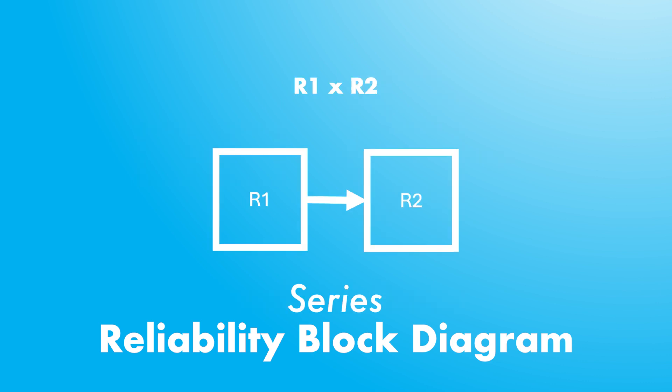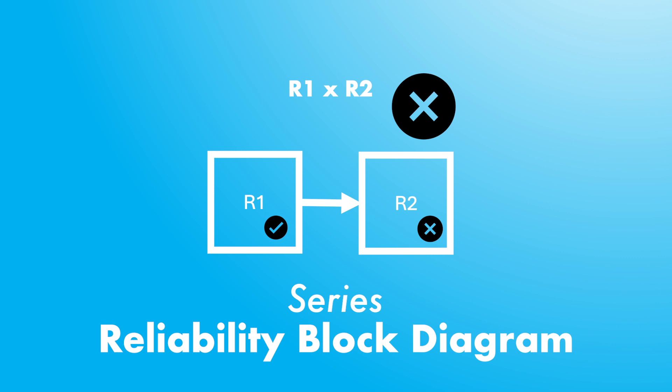In a series system with n components, the overall reliability is calculated by multiplying the reliabilities of each individual component. This is because all components in a series must function successfully for the entire system to work — if one component doesn't work, the system doesn't work either.